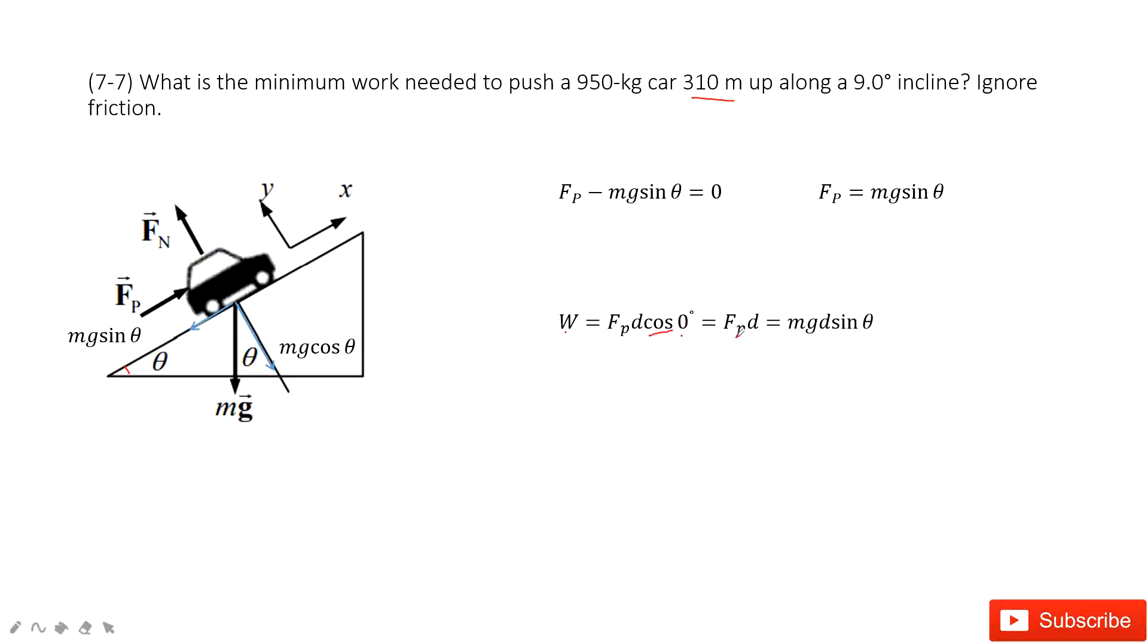So cosine zero degree is Fp d. This d is given. So if we want to know this work, we must know Fp. How can we know Fp?